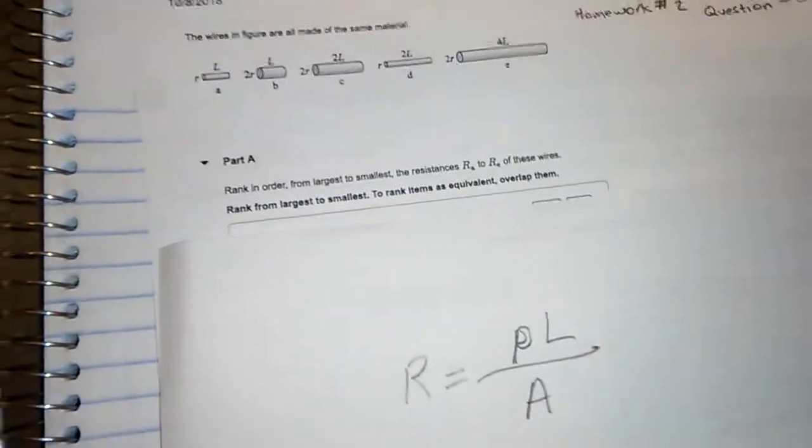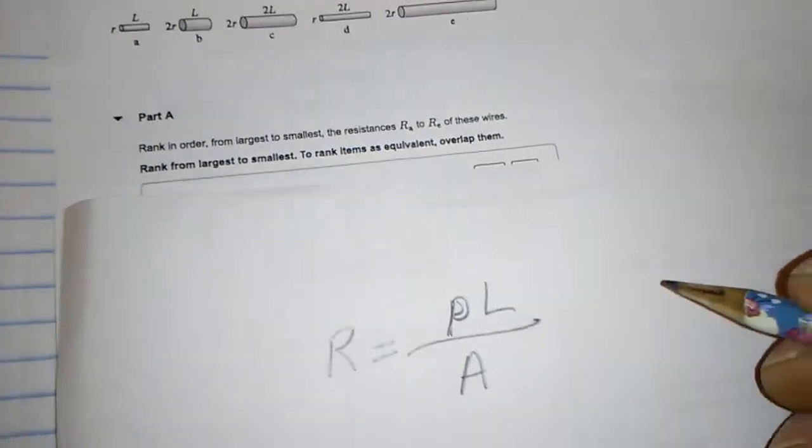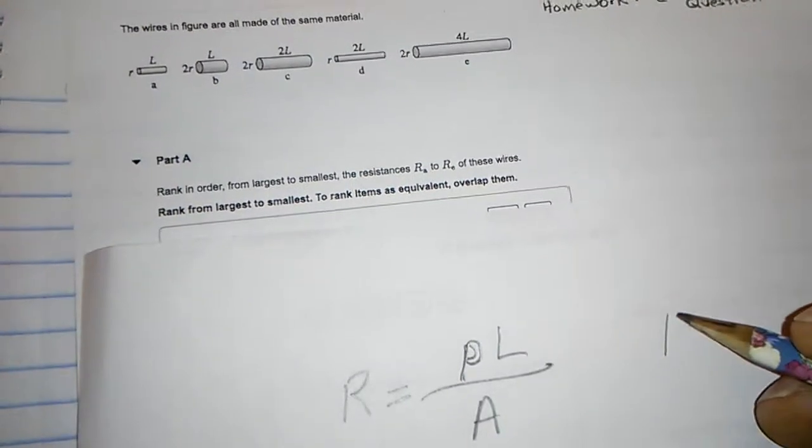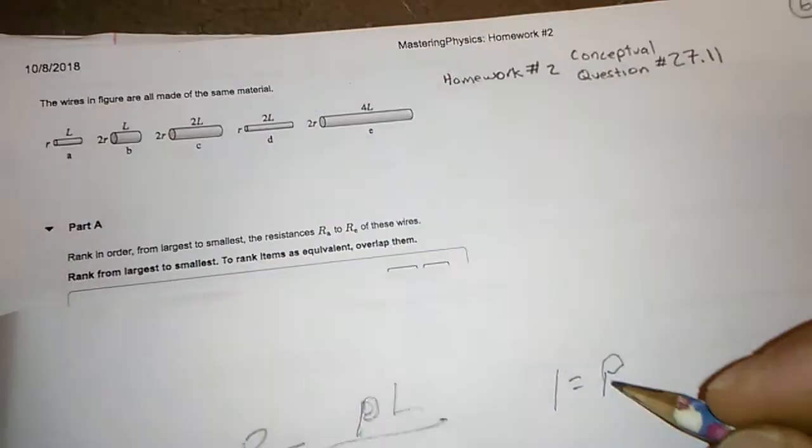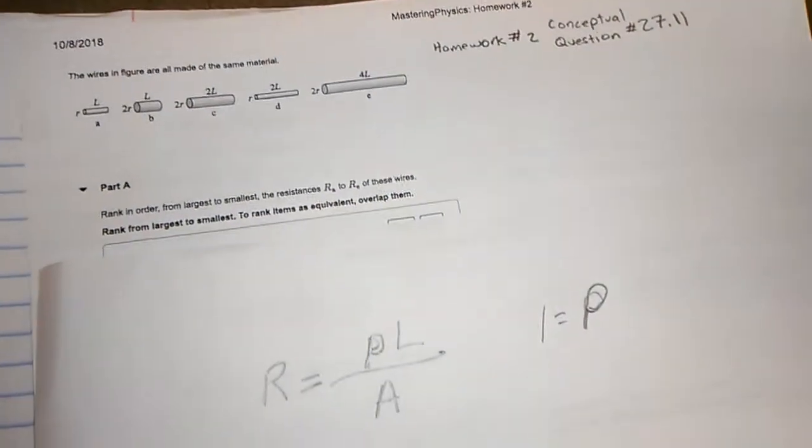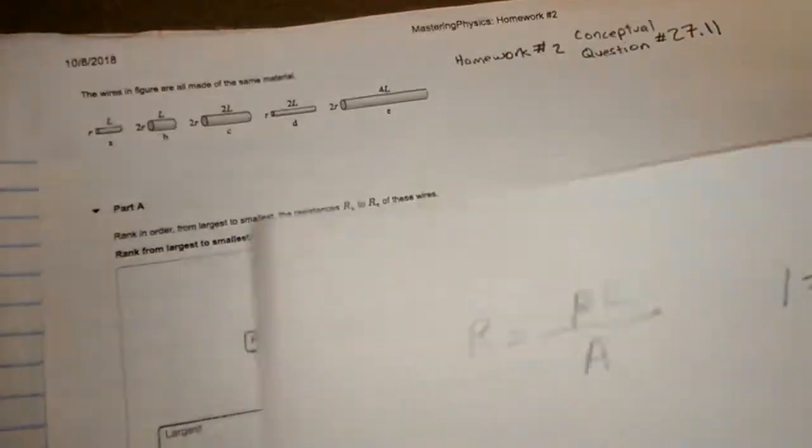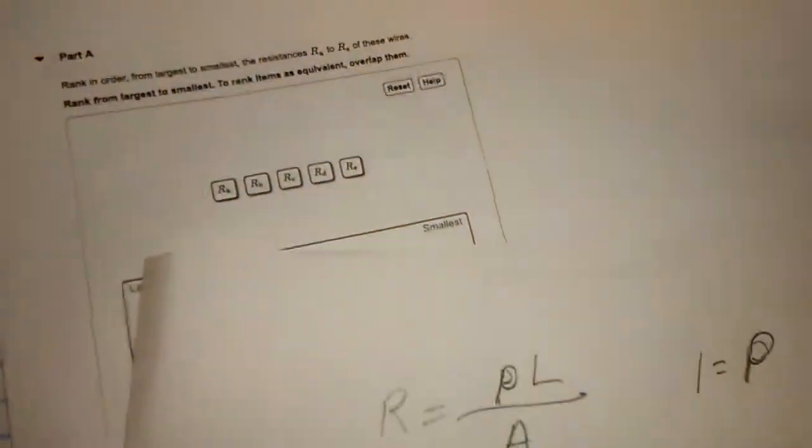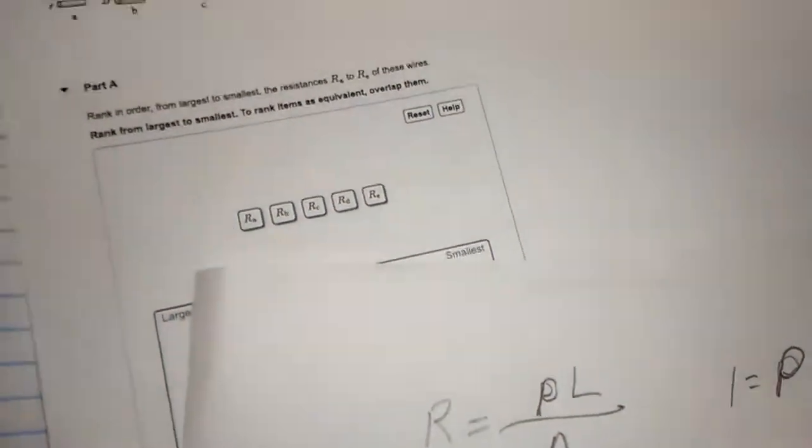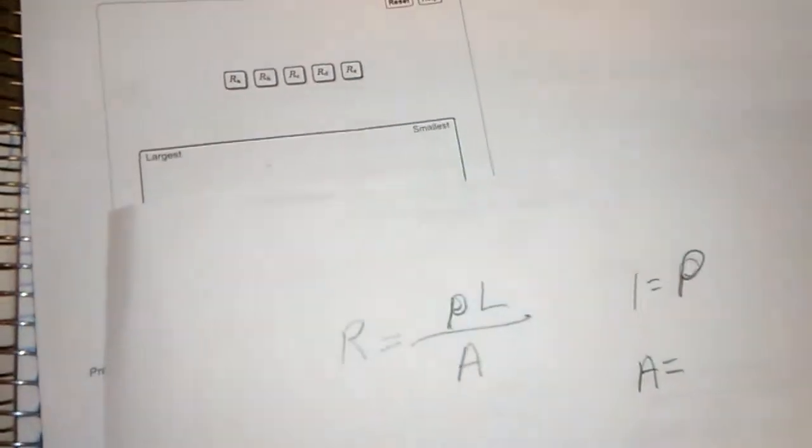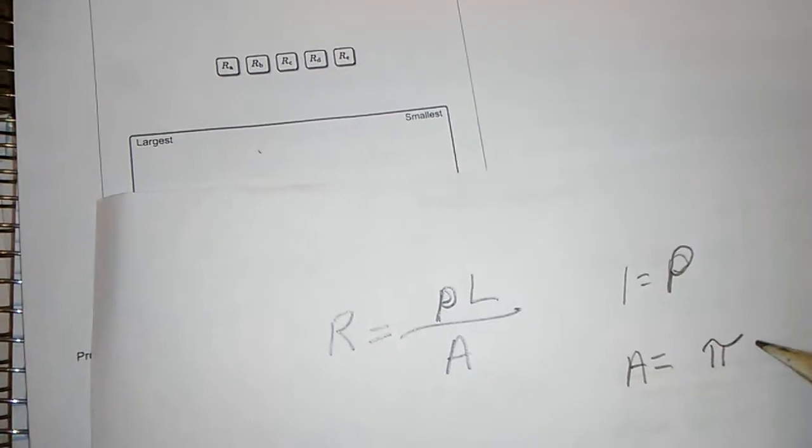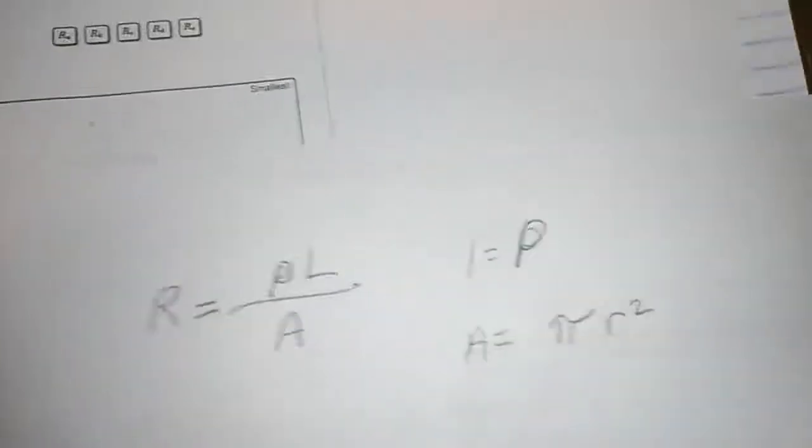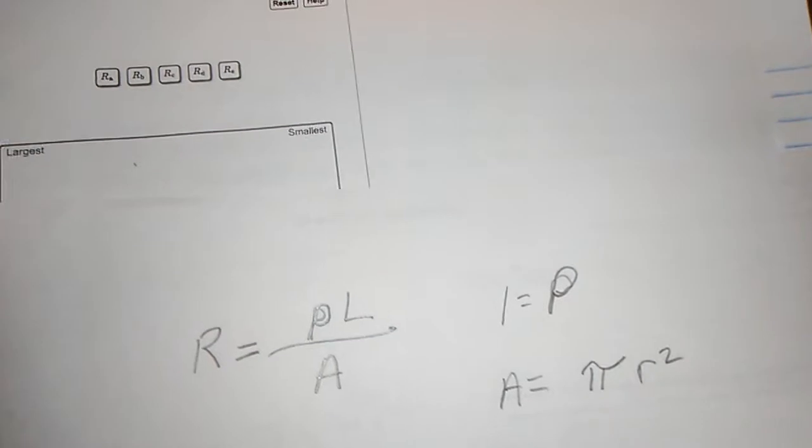We're going to simplify our equation. We're going to use one for rho. And you can begin to calculate. And for area, since they're round circular wires, that's going to be pi times R squared. So let's do some calculations.